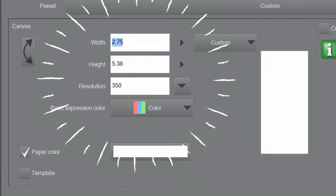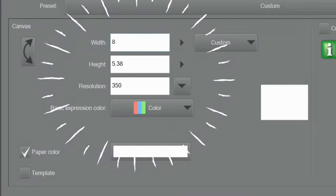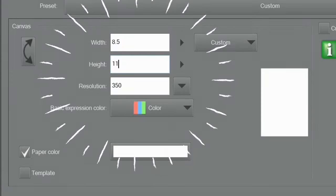To do that, you want to create a new canvas that is the size of your printer paper. In my case, I'm printing on standard US letter size paper, which is 8.5 inches by 11 inches. And I am also setting this canvas to 350 dpi.